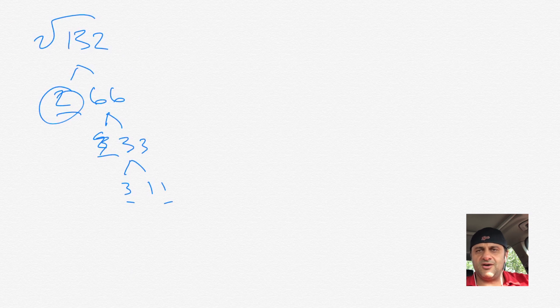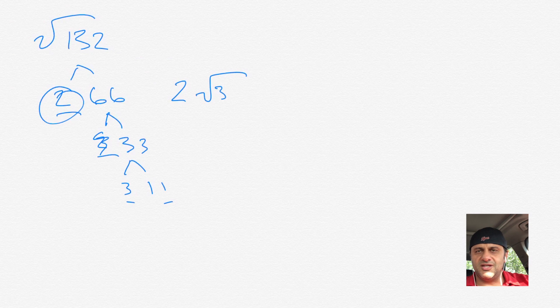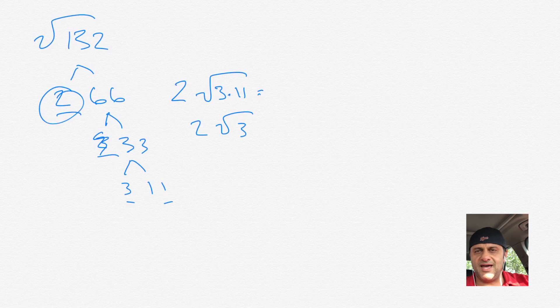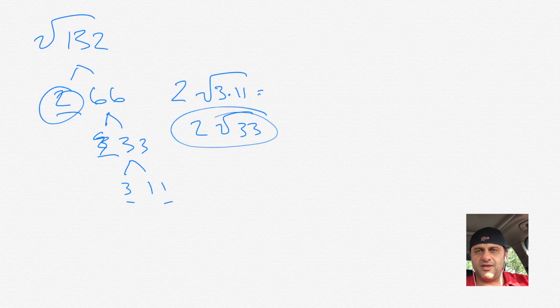you can cross one out, and then the other one goes outside of the square root, so to speak. So then it would be 2, and then what we didn't have paired up is the 3 times 11. And then when we multiply that, we get 2 outside of the square root of 33, and that's the simplified version. It is 2 square root of 33.